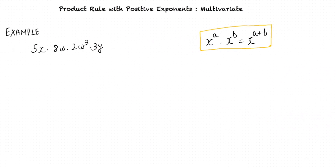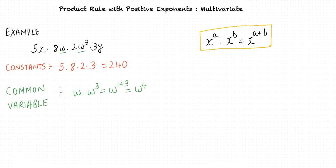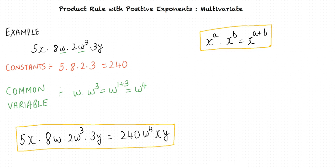Let us consider another example. We are required to simplify 5x times 8w times 2w cubed times 3y. First, we multiply the constants. We have 5 times 8 times 2 times 3, which equals 240. Next, we identify the common variable which repeats more than once in this product, which is w in this case. w times w cubed equals w to the 1 plus 3 power, equals w to the 4th power. We finally simplify to obtain the product: 5x times 8w times 2w cubed times 3y equals 240w to the power 4 xy.